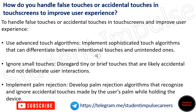How do you handle false touches or accidental touches in touchscreens to improve user experience? Use advanced touch algorithms that can differentiate between intentional touches and unintended ones. Disregard tiny or brief touches that are likely accidental and not deliberate user interactions. Implement palm rejection algorithms that recognize and ignore accidental touches made by the user's palm while holding the device.